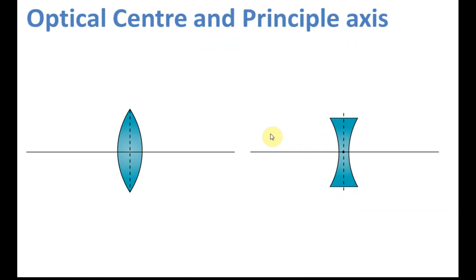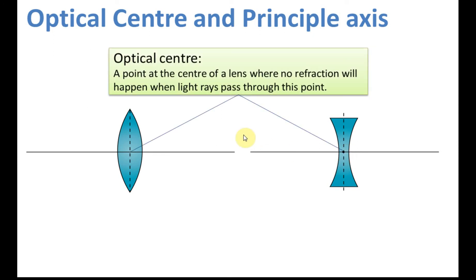Before we discuss the image formed by the lens, let's look at the essential terms we need to know. First, we will learn what optical center and principal axis are. We have two lenses here — the convex lens and the concave lens. The center of the lens, at this point, is called the optical center. This is the same for the concave lens — this point is the optical center.